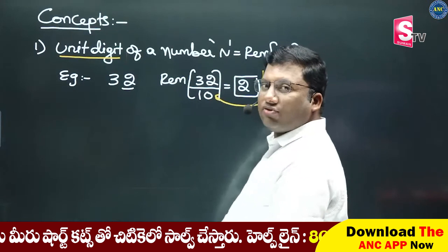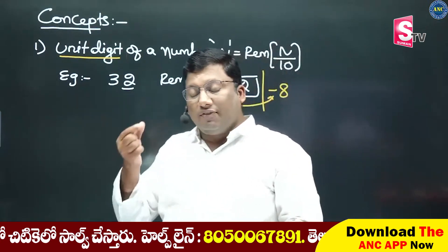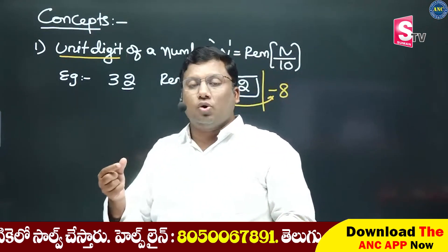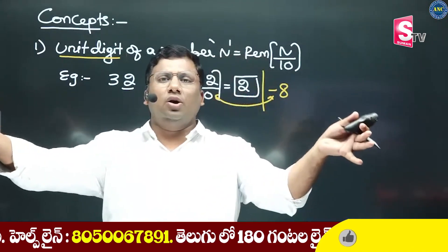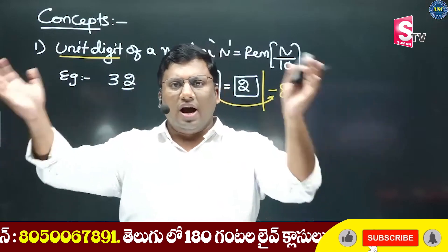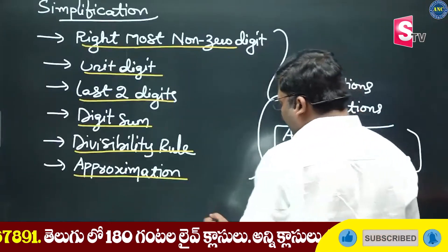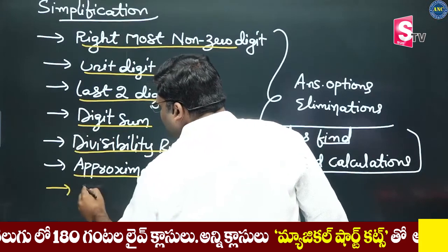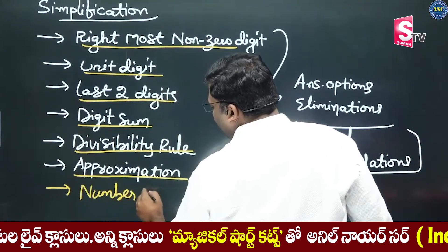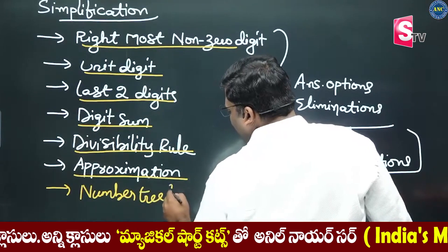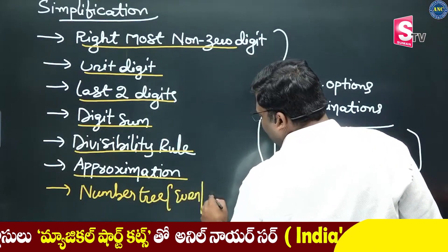There is a unit digit of a number. A unit digit of a number is — for example, 16. This is a very important concept, number 3. This is number 3.